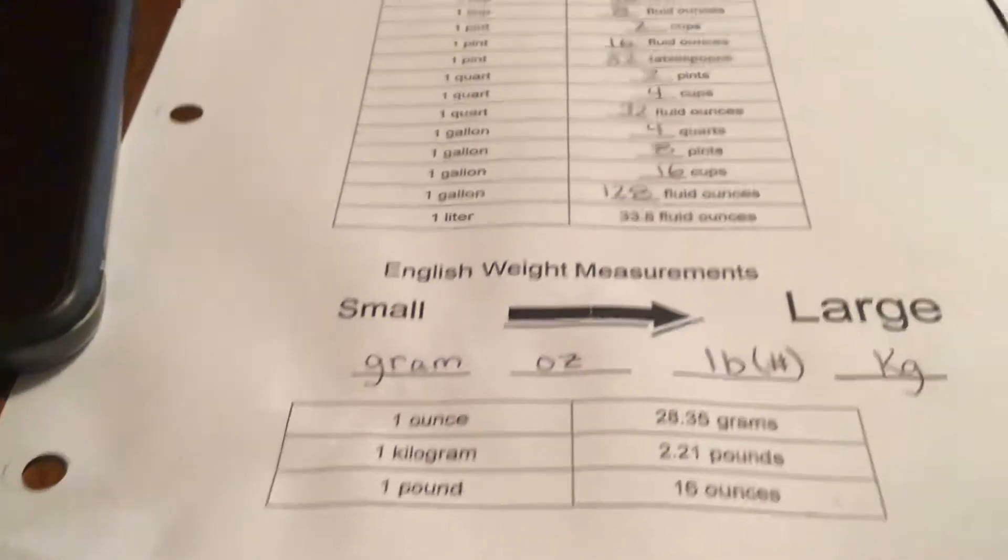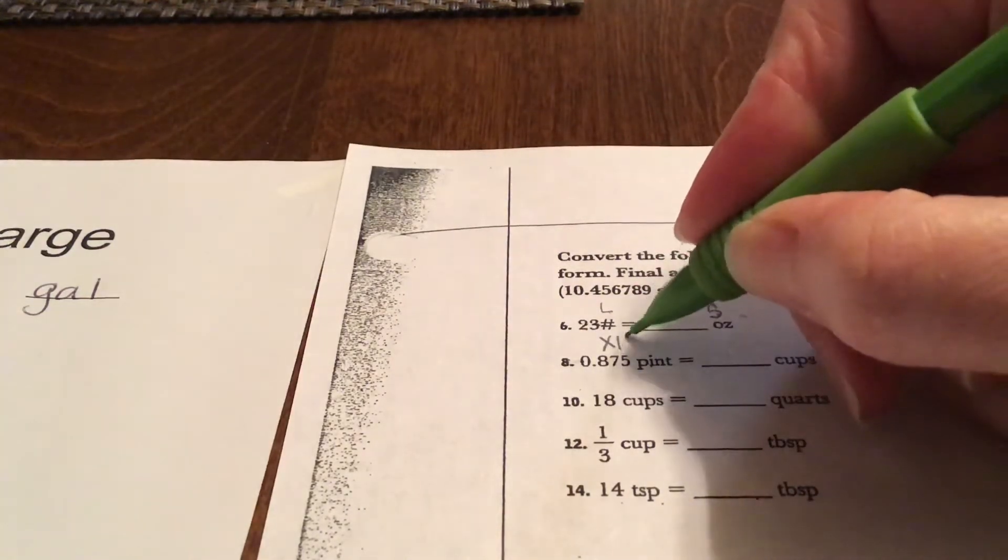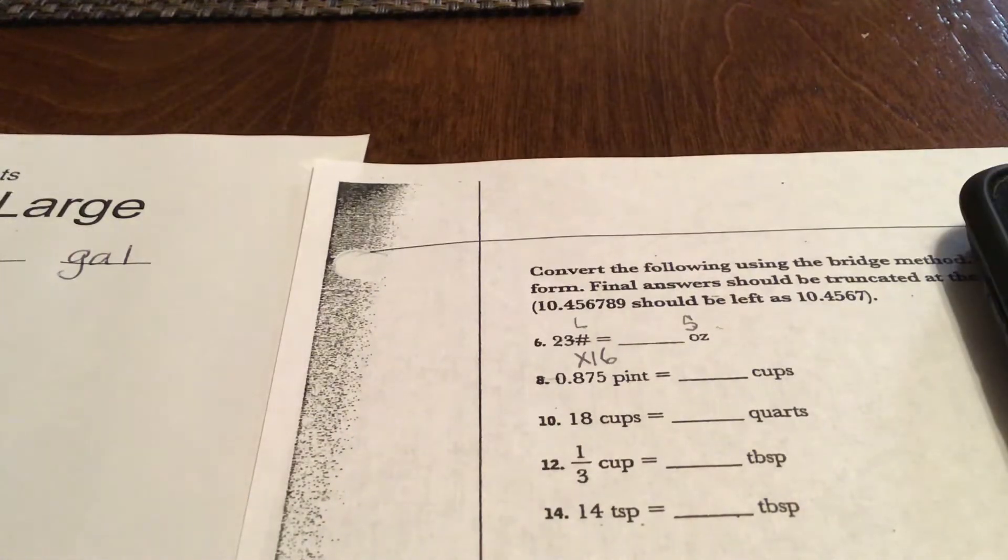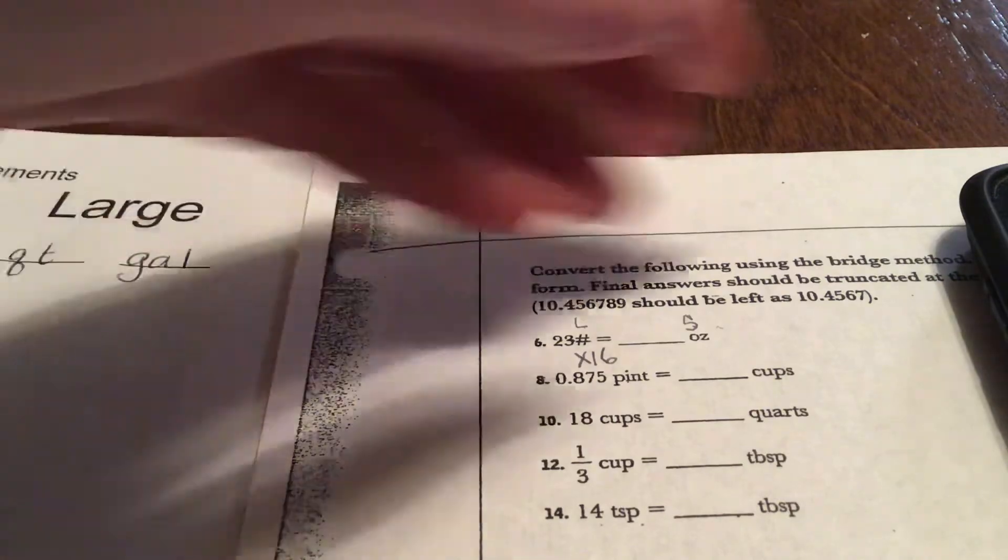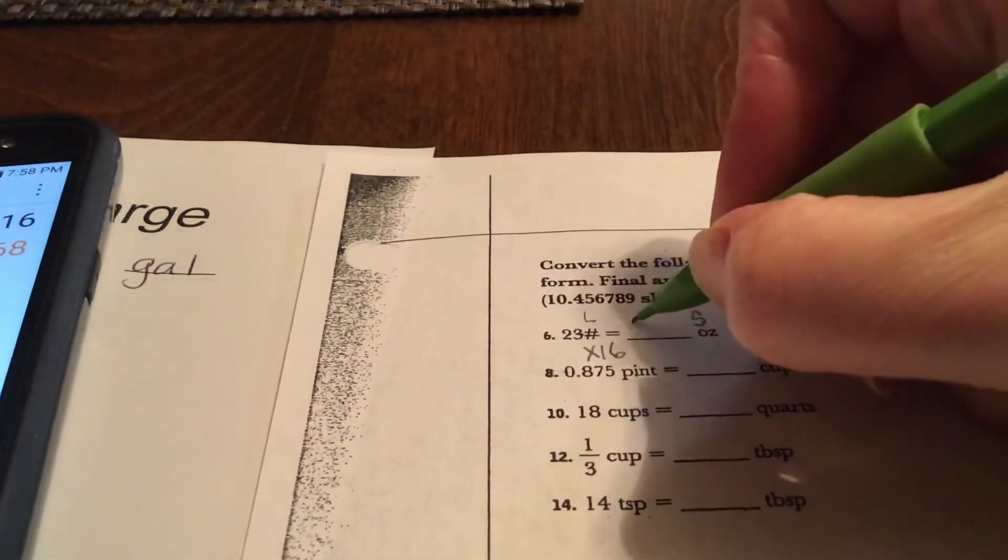So you would multiply by 16, and yes you can get your calculator out here. I don't expect you to do it in your head or anything like that. I get the answer of 368 ounces.